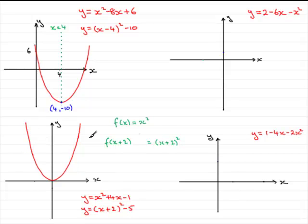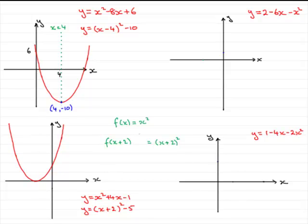We look at the base graph f of x equals x squared — a parabola through the origin — and build up our graph from there. We consider f of x plus 2, replacing x with x plus 2, giving x plus 2 all squared. Because we have plus 2, it doesn't shift the graph to the right — it shifts it to the left 2 units. We then subtract 5, which pulls the graph down 5 units.